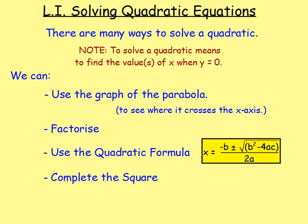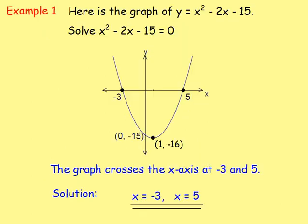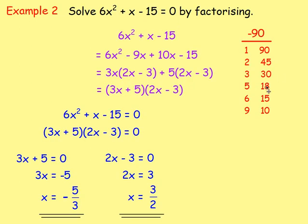We then looked at solving quadratic equations, reviewing the different methods. You could solve by graph — look at where the graph crosses the x-axis. This one crosses at -3 and 5, so x equals -3 or x equals 5.